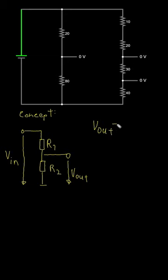In the very simple case of two resistors, you have output voltage equals input voltage times R2 over R1 plus R2.